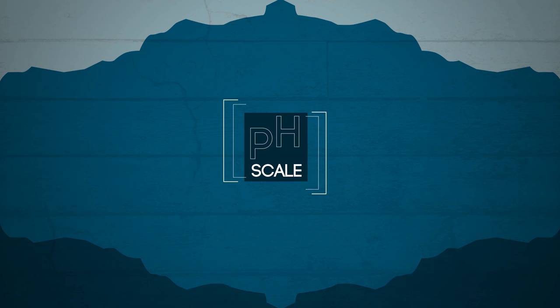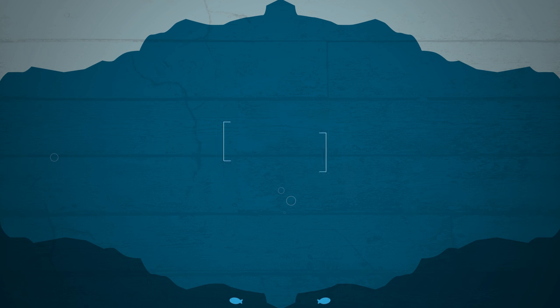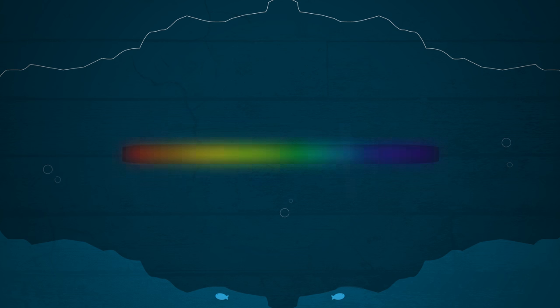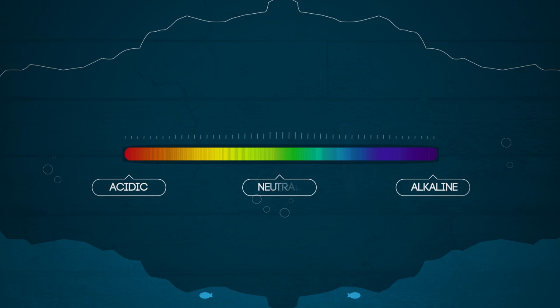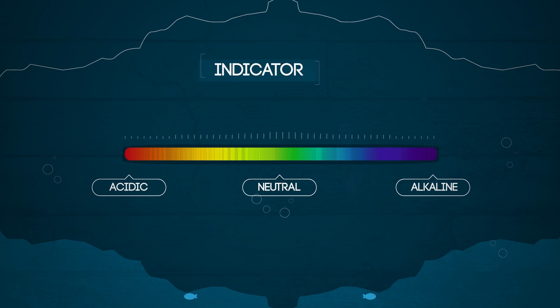In this video, we are going to have a look at the pH scale and some other simple indicators of acids and alkalis. In other videos, we have seen what makes something acidic, neutral, or alkaline. We can tell if something is acidic, alkaline, or neutral by using an indicator. Indicators are substances that show different colours when they are in acidic or alkaline conditions.